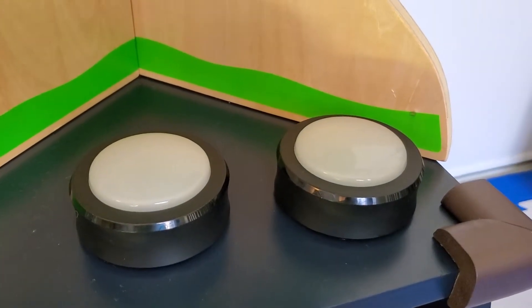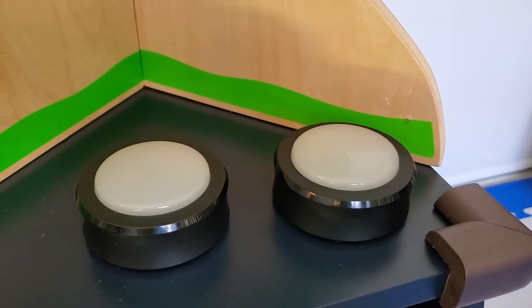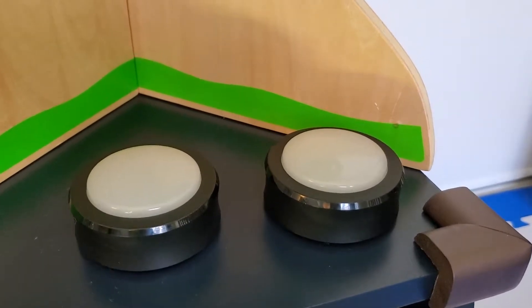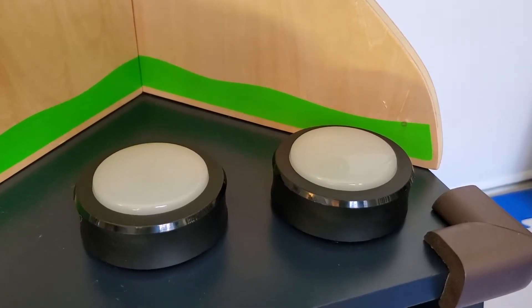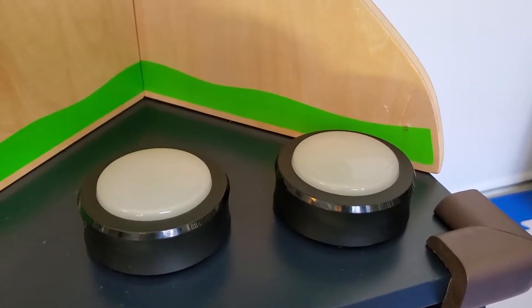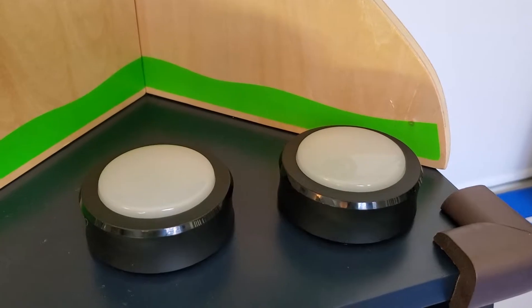But I set up a routine where one of the buttons turns the lights off, and the other button turns the lights on. It's really easy. You just set up a routine in the app, and you choose the Hue lights and say off for one button and on for the other.